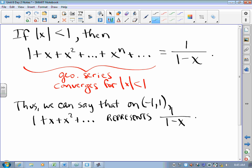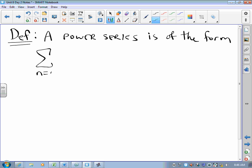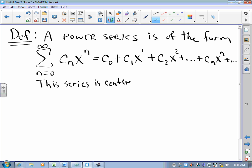So we call infinite polynomials of that form power series. So a power series is of the form, n goes from 0 to infinity, some constant c_n times x to the n. You get a constant, you get another constant times x to the first, you get another constant times x to the second, the n-th term is a constant times x to the n, and so on. We say that this series is centered at x equals zero.